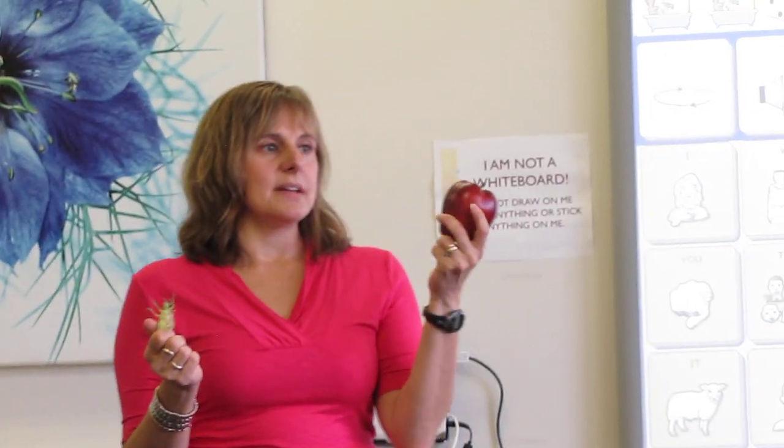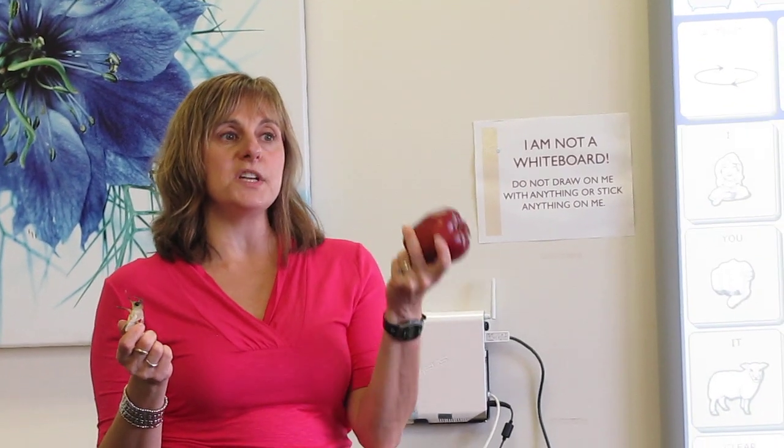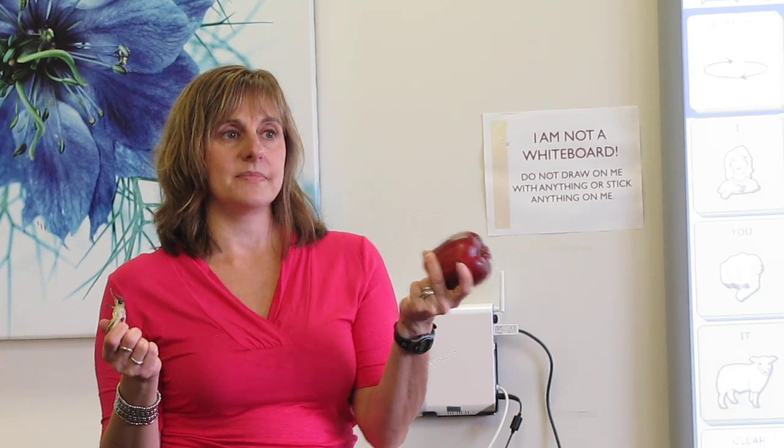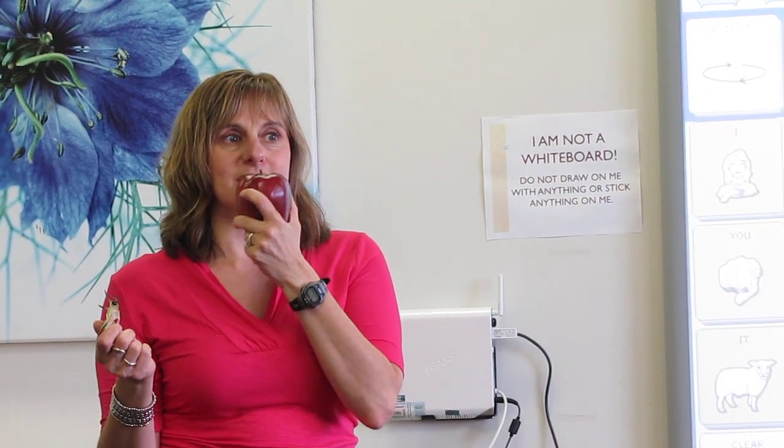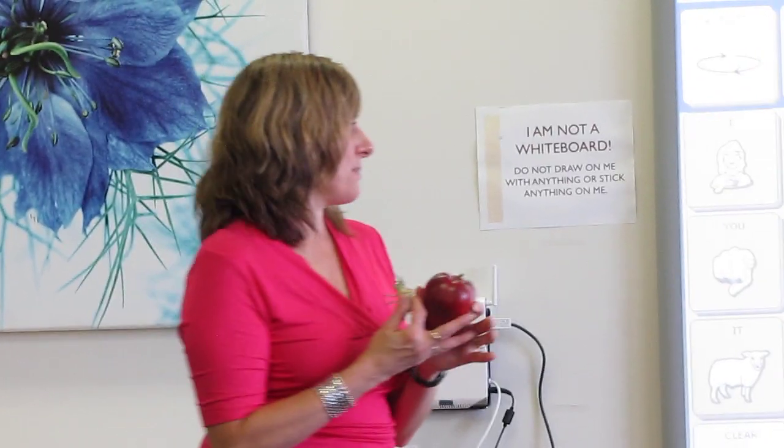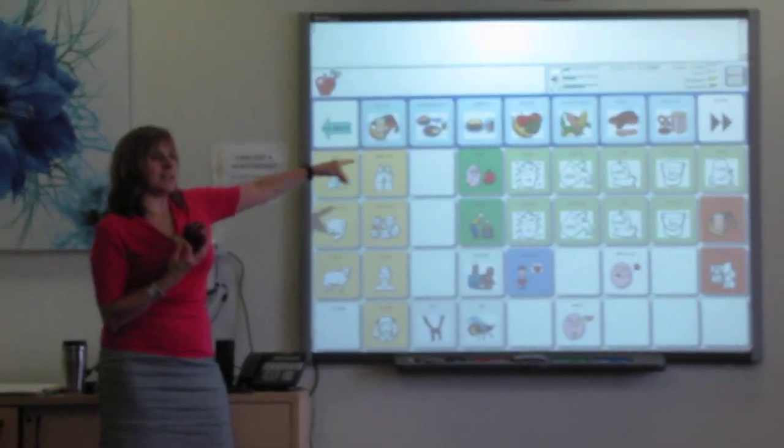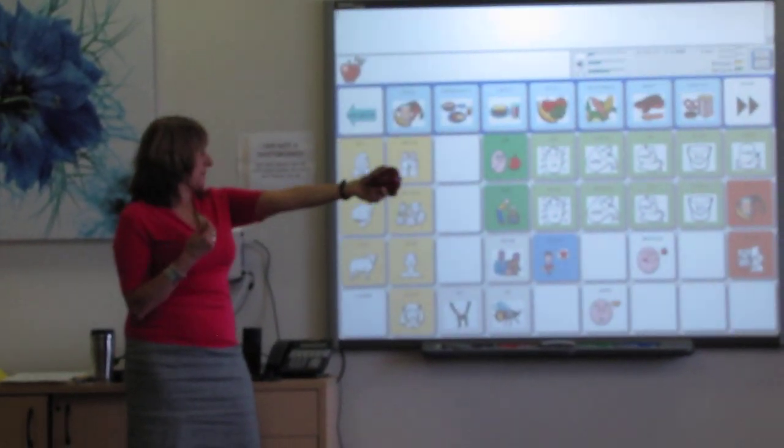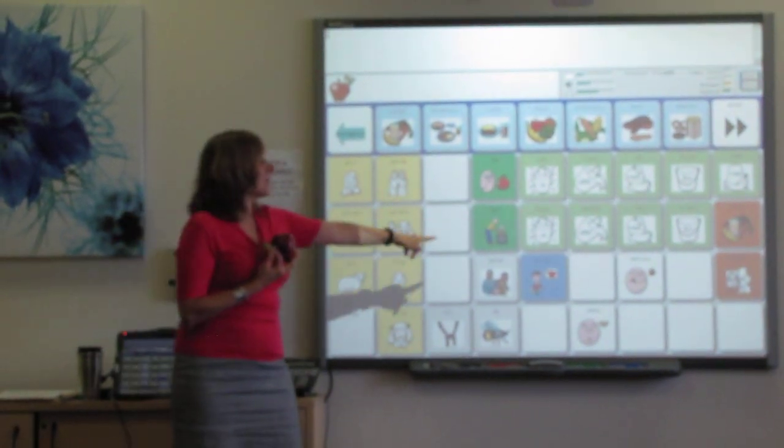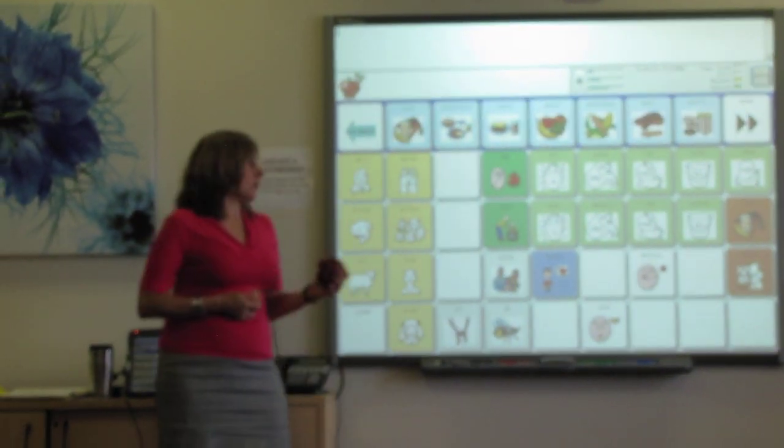So the apple is going to code lots of things because what do we do with the apple? We eat the apple. That's right. We eat the apple. So when we press this one, we're going to get the verb eat and we can feed somebody an apple. We get feed. We're hungry. So hungry.